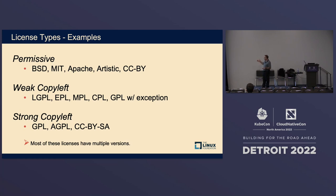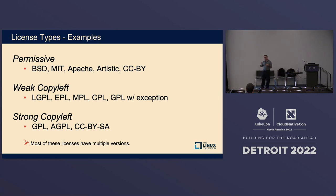The copyleft licenses, like GPL and LGPL, also allow you to use the code, but they have stronger obligations. If you have your own code and you mix it with open source under a GPL license, the GPL requires that the combined work — your code plus the open source together — must be released under that GPL license if you distribute it, even just by giving it away. That's why they're called copyleft licenses, sometimes called viral licenses.